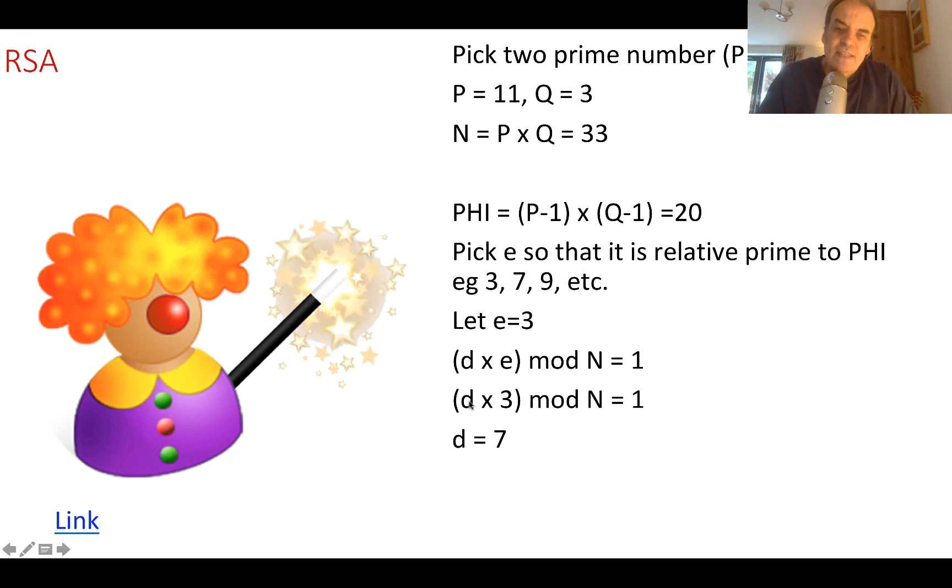So it's quite easy in this case. D times 3 mod N. We could go through the different values, but 7 times 3 is 21. So 1 mod N, mod of 20 gives us 1. So our decryption key is 7.